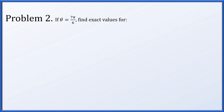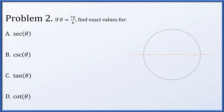In problem 2, we're given an angle theta of 7π/6, and we're going to find exact values for the secant, cosecant, tangent, and cotangent of the angle. The angle 7π/6 is just a little bit larger than π — in fact, it's π/6 larger than π, so that is our reference angle. This gives us an x-coordinate of √3/2 and a y-coordinate of 1/2, but we're in the third quadrant, so we make them both negative.